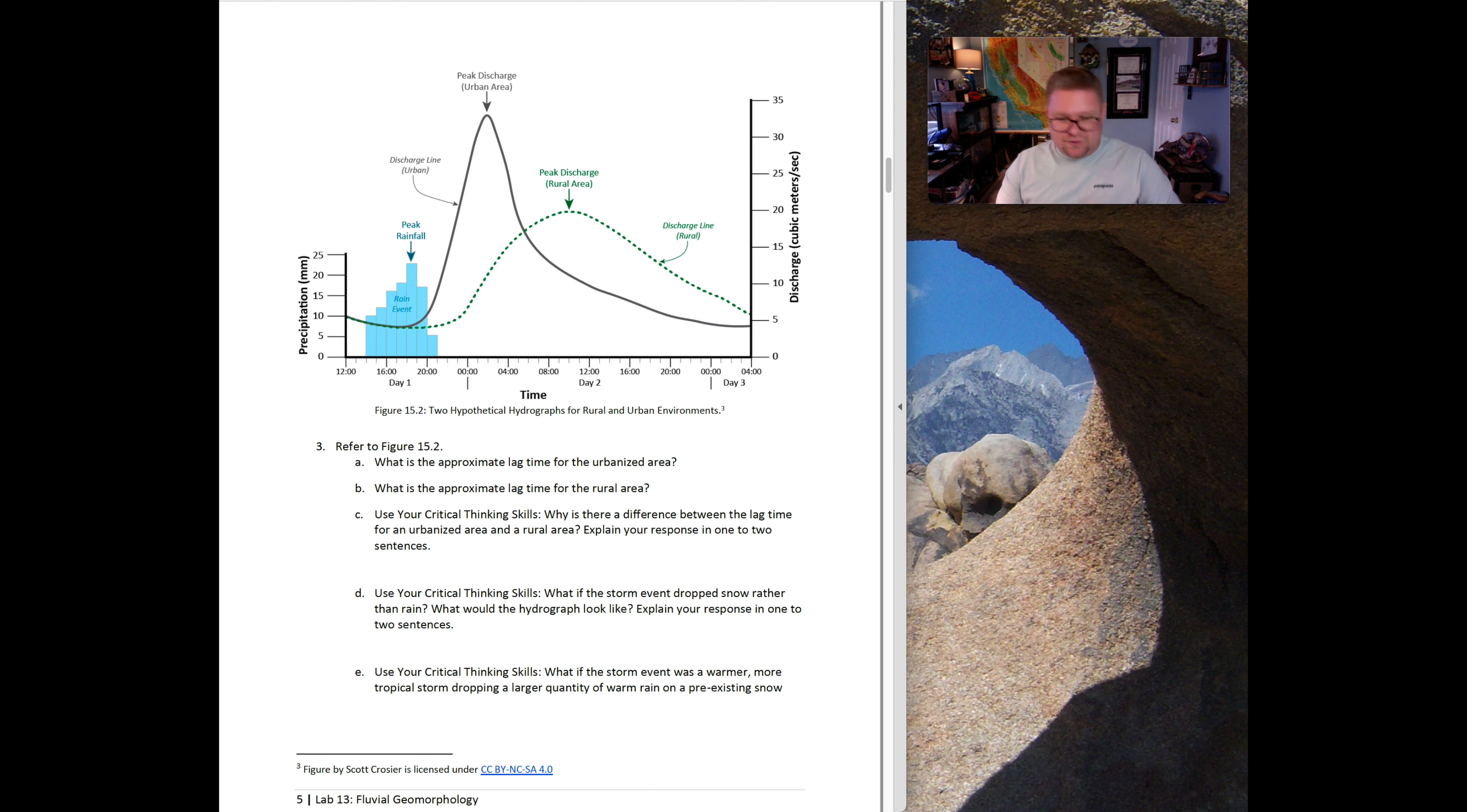Question three says what is the approximate lag time for an urbanized area? What is the approximate lag time found in a rural area? It's having you interpret this diagram and asking a handful of questions about what you're seeing. This part here measures the blue bar graph, which is the amount of precipitation in millimeters. We also have the time, taking us over a course of partially three days. And we can see the amount of discharge measured in cubic meters per second. Think about it: concrete river channel versus a dirt river channel. What are the big differences? What would you expect to find?